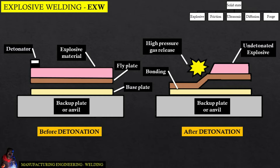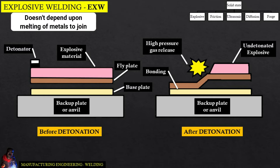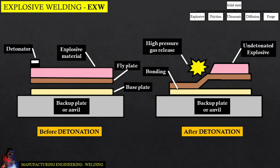Explosive welding differs from other traditional joining processes as it does not depend on melting of the two metals to be joined, or on plastic deformation of the surfaces in contact.